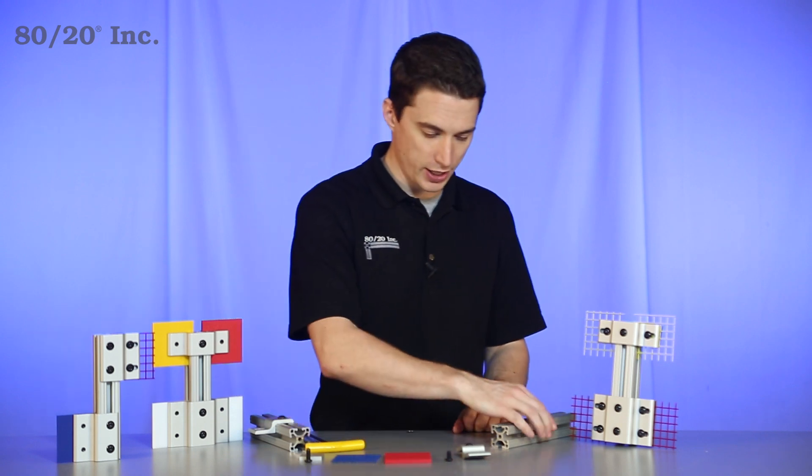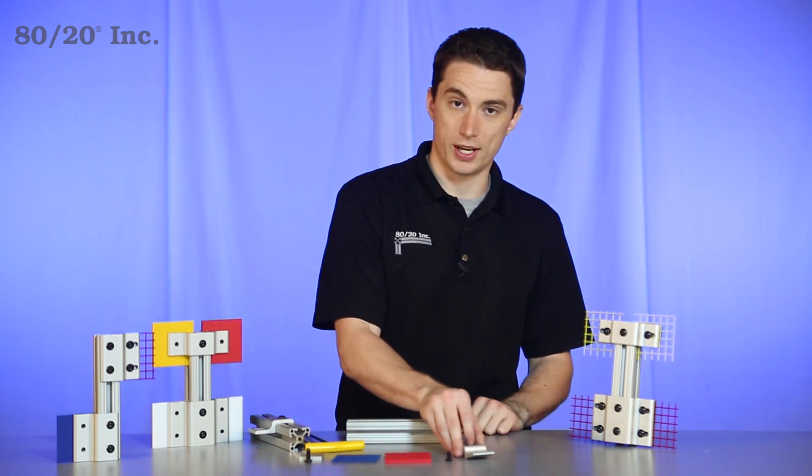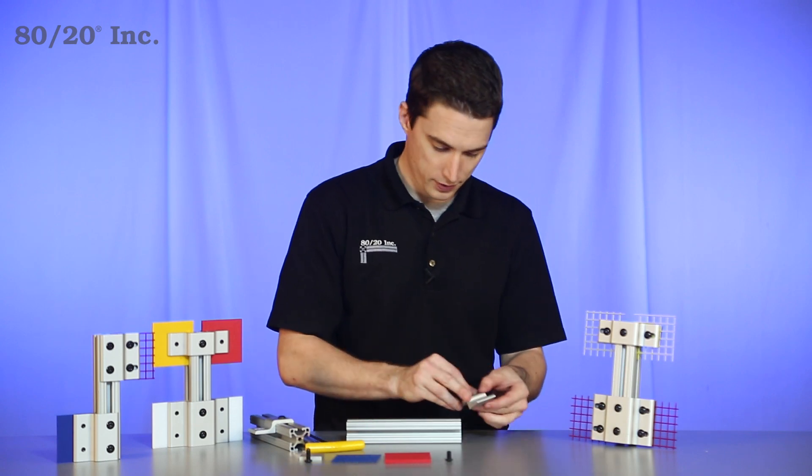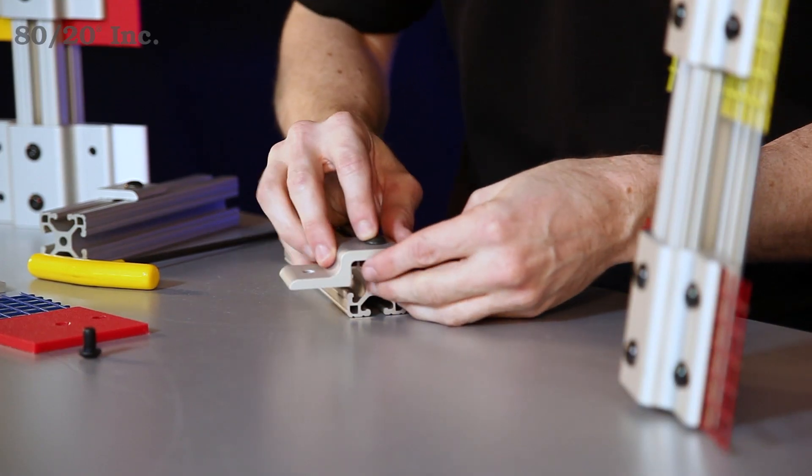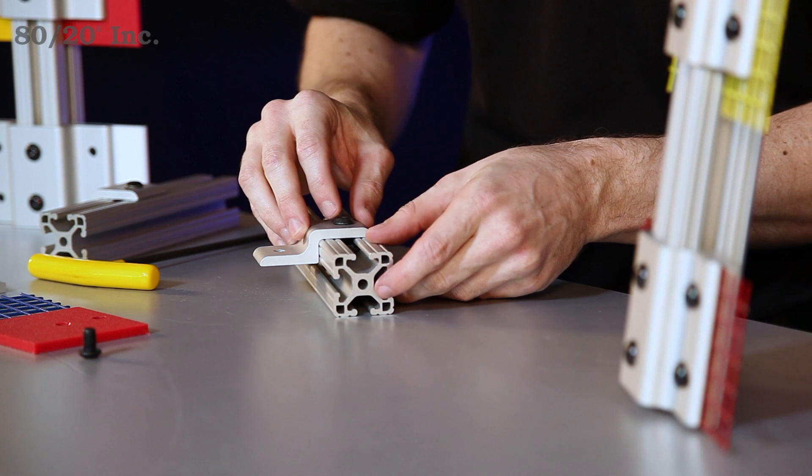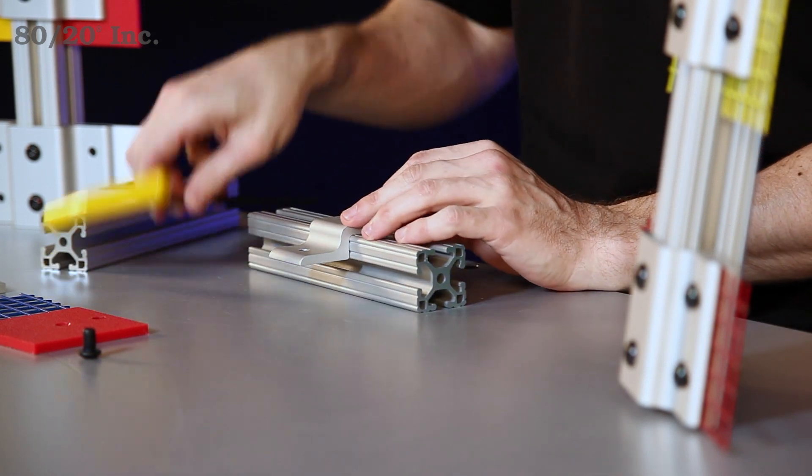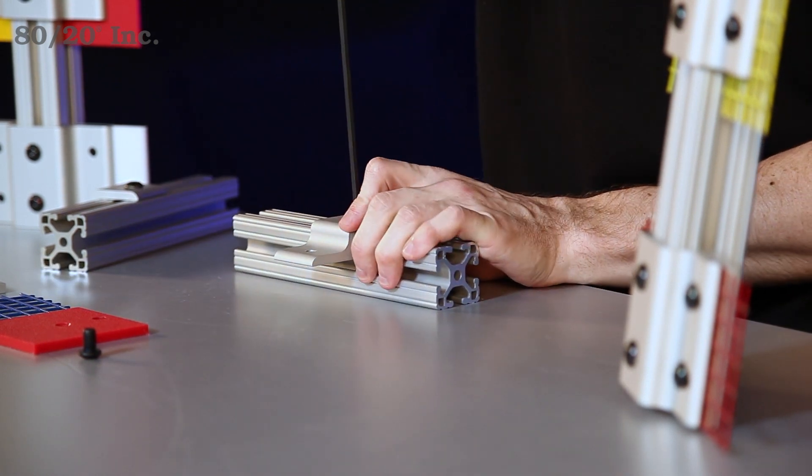Now when it comes to installing the panel retainer, you'll take your retainer with the preloaded T-nut and bolt on it and slide it right into the open T-slide. You'll find your location, tighten that down and secure it.